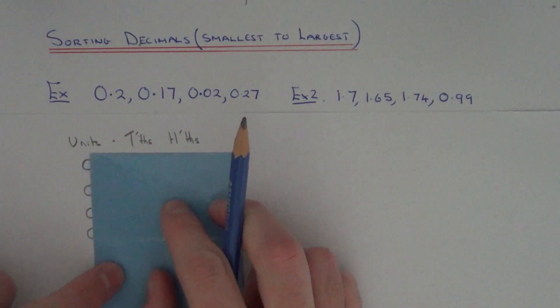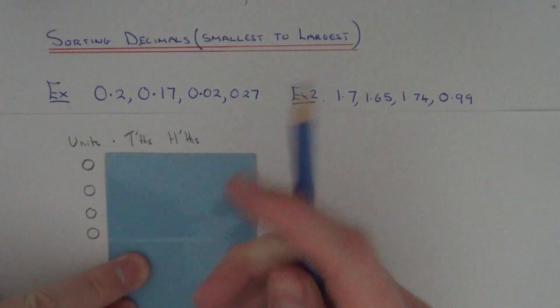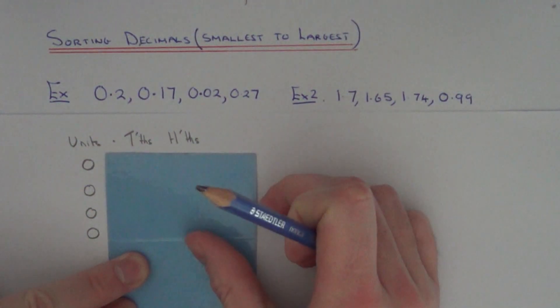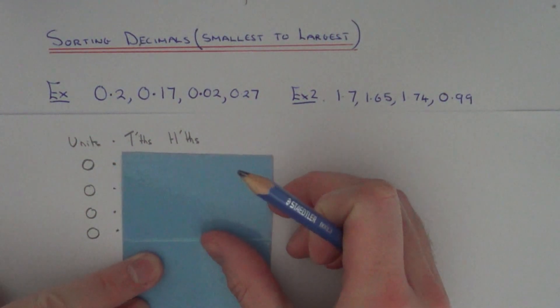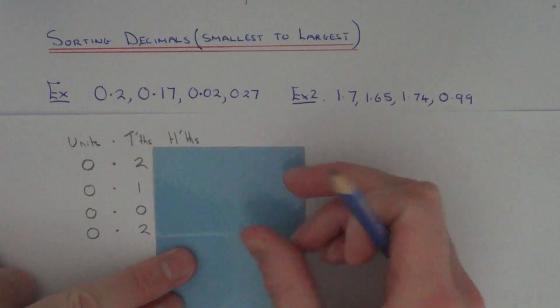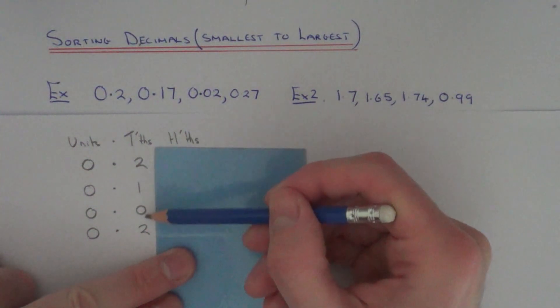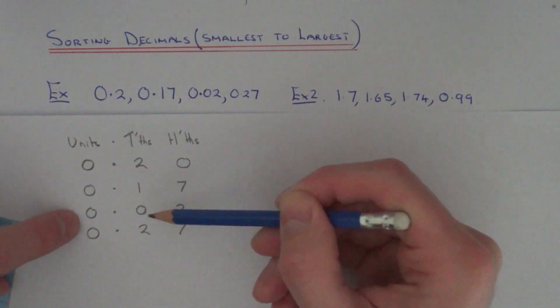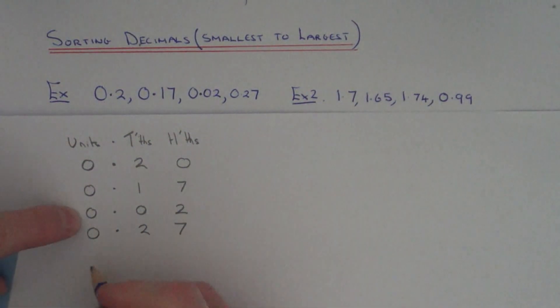So let's look at our first column then. We've got 0s in all the first columns, so we can't decide which one's the smallest here. So we need to move out to our tenths column. As you can see in the tenths column we have a zero here. So this will mean that 0.02 is our smallest decimal.